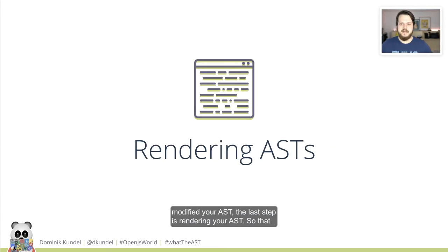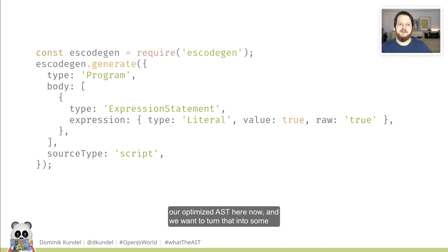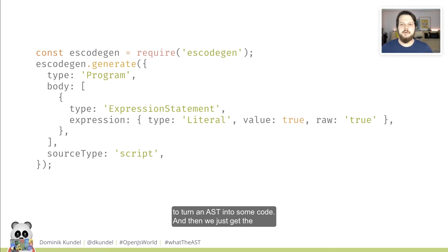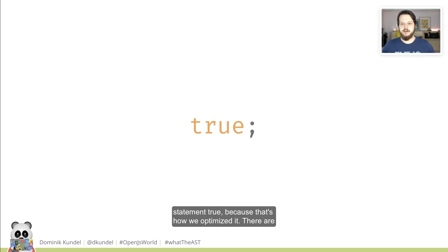Once you've modified your AST, the last step is rendering your AST — turning it into output. We have our optimized AST, and we use a library such as ESCodeGen that knows how to turn an AST into code. We just get the statement true, because that's how we optimized it.